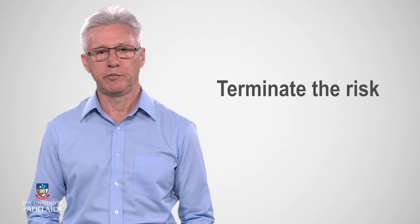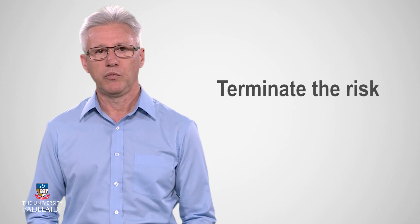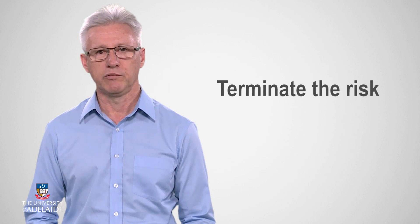The fourth response option that you can consider is to terminate the risk, which means that you have decided to eliminate the risk completely. This can be done by changing an inherently risky process or practice to remove the risk or, for example, changing the project scope. If an item presents a risk and can be changed or removed without it materially affecting the business, then removing the risk should be the first option considered rather than attempting to take, treat or transfer it.